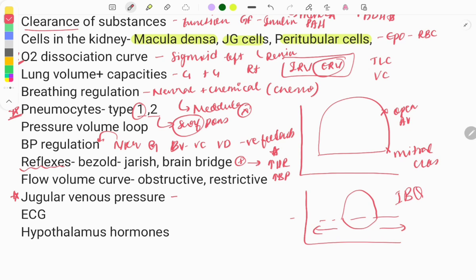Jugular venous pressure (JVP) is very very important. There are waves of the JVP: a, c, v, x, and y. You need to know what each wave signifies and which wave is affected in which heart disease. For example, in atrial fibrillation the 'a' wave is absent, and a cannon 'a' wave is seen in tricuspid regurgitation. These one-liners are asked and can also be integrated with medicine.